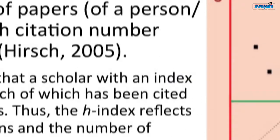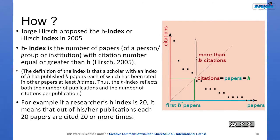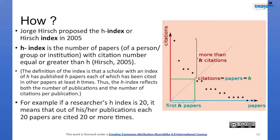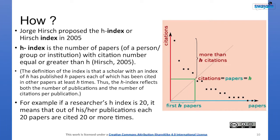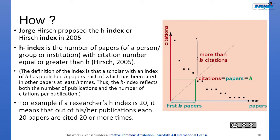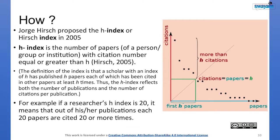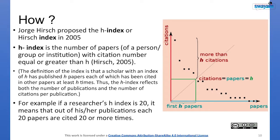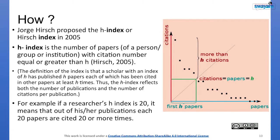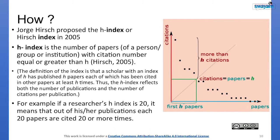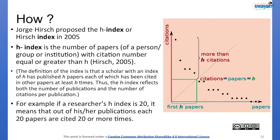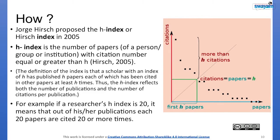H-index is also a dynamic index but only increases — it does not decrease. H-index is the number of papers cited a certain number of times. Specifically, H-index is the number of papers of a person, group, or institution with a citation number equal to or greater than H. A scholar with an index H has published H papers, each of which has been cited in other papers at least H times. Thus the H-index reflects both the number of publications and the number of citations per publication.